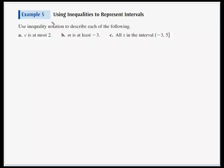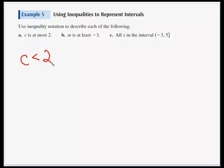In Example 5, we use inequalities to represent intervals. Part A: 'C is at most two.' So we have C and something to do with 2. C is at most two means it's never going to be more than two, so C is going to be less than two. Can C equal 2? C is at most two, so yes, it can achieve being two. Therefore: C ≤ 2.